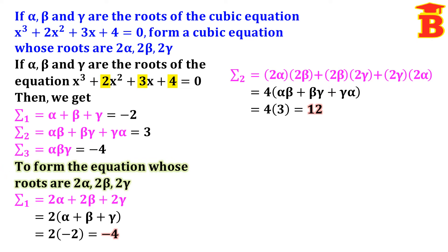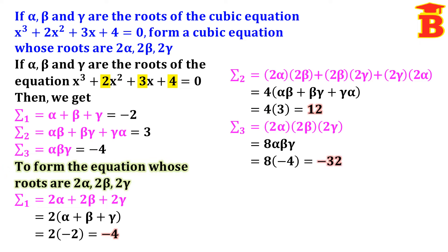Next, let us find new sigma 3. We multiply the three roots: 2 alpha times 2 beta times 2 gamma. Here 2 times 2 times 2 equals 8, so we get 8 times alpha beta gamma. We have the value of alpha beta gamma as minus 4, so substituting: 8 times minus 4 equals minus 32. Now we have the values of sigma 1, sigma 2, sigma 3 for the new equation.